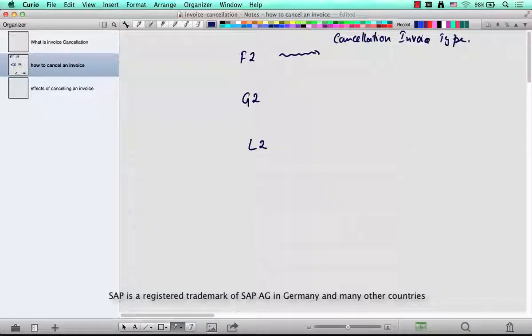The standard cancellation invoice types are S1, and this is S2, and for this is S1.